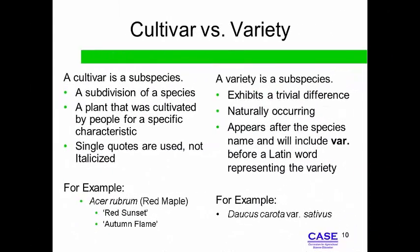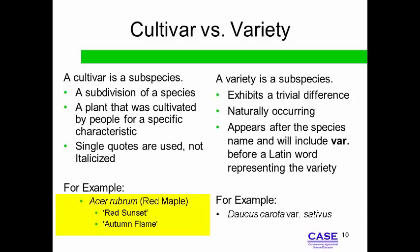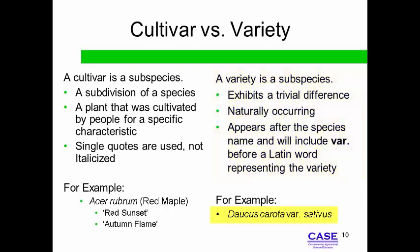The main difference between a cultivar and a variety is how each was derived. A cultivar is a genetically different subspecies caused by human cultivation. A cultivar name is typically written in the common language used by the plant developer, as shown here. A variety is a genetically different subspecies found in nature and is typically a Latin term. Correctly written, the abbreviation VAR is not in italics, but the variety name is, as shown here.